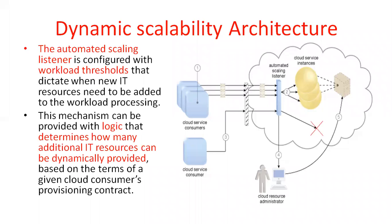Based on the contract, for example, if the consumer is given five servers, the automated scaling listener has a scaling threshold of five. If the consumer requests a second server, it allocates that server. If they ask for another server, it will allocate it. But if the threshold value exceeds five, then it stops. That is the main work of the automated scaling listener.